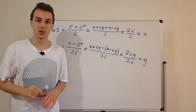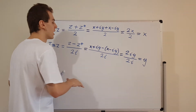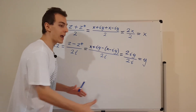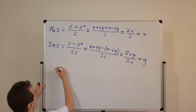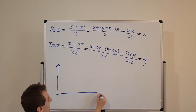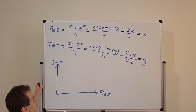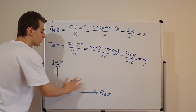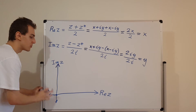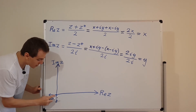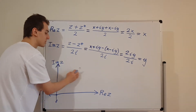Now let's look at a visual intuition for where these expressions come from. I'm going to draw just the top-right quadrant of the complex plane and focus in on that — this works for any complex number, but for simplicity I'll focus here. The real axis runs horizontally and the imaginary axis runs vertically, with 0 at the origin.